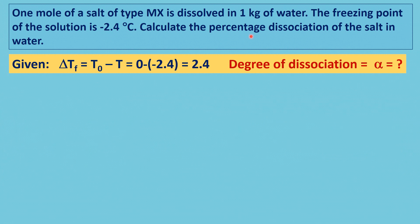Let us write the given data in the problem. This is based on depression of freezing point. There are four important colligative properties: relative lowering of vapor pressure, elevation of boiling point, depression of freezing point, and osmotic properties. We will solve this problem based on depression of freezing point. The freezing point of pure water is T₀, and T is the freezing point of the solution. Therefore, delta Tf, the depression of freezing point, is equal to 2.4 degree Celsius.